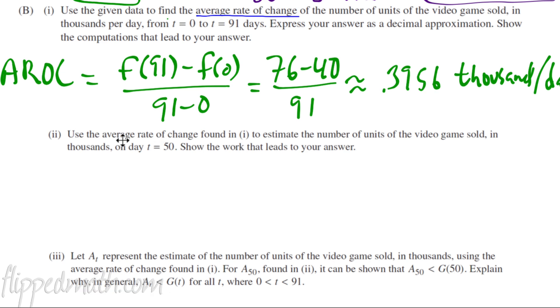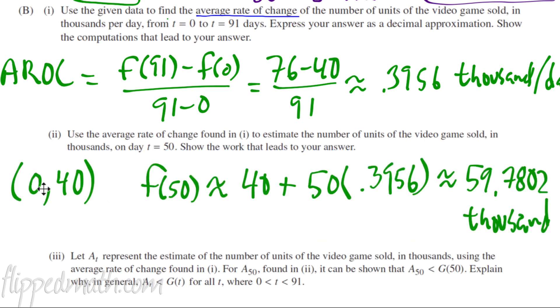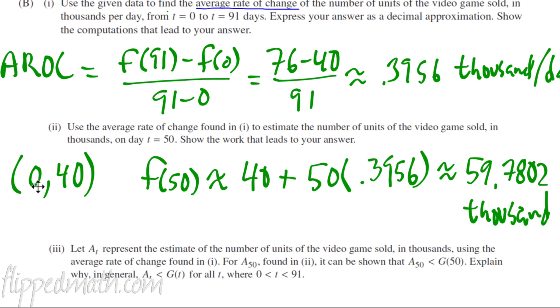On to the next question. Use the average rate of change found in 1 to estimate the number of video games sold in T equals 50 on the day 50. Now, here's how we do it. This is how I did it. So, I'm going to look at the 0, 40. At 0, we're at 40, right? At 0, when T is 0. I need to go to T is 50. So, if I want to find F of 50, then I take that 40, which is the output, and I add 50 slopes to it. The slope is positive 0.3956. Take that Y value, which is 40, and you add this slope 50 times because the slope is how much the function changes in one unit. If I go over 50 units, I'm being asked to find T equals 50, which is 50 units away from zero. So, I start at 40, and I add 50 times this slope that we have, and you'll get 59.7802,000.